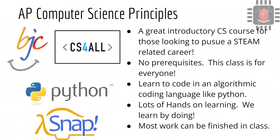AP Computer Science Principles is also a class for everyone — CS for all. This is a great introductory computer science course for those looking to pursue a STEAM-related career: science, technology, engineering, arts, and mathematics. There are no prerequisites; this class is for everyone. In this class, you'll learn to code in an algorithmic coding language like Python. Algorithmic programming languages are used to create apps and applications that run on computers and mobile phones.